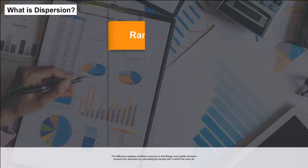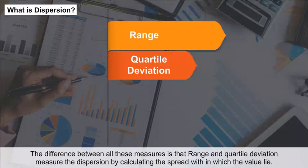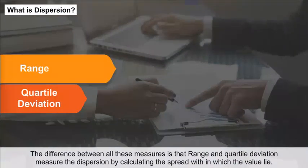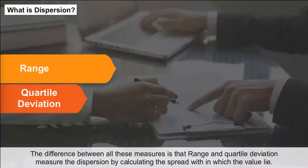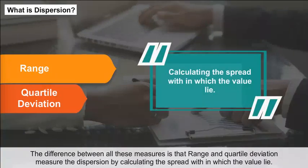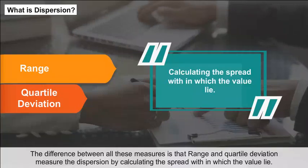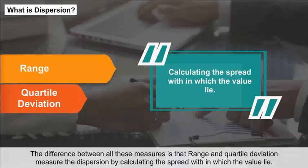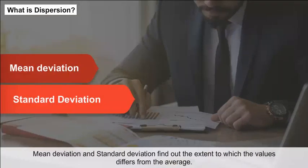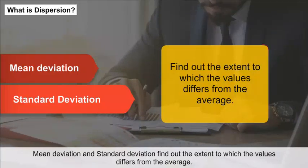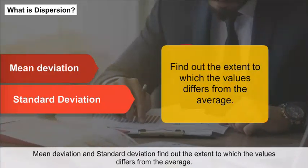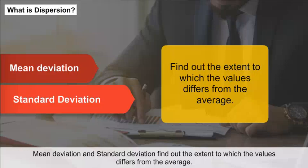The difference between all these measures is that range and quartile deviation measure the dispersion by calculating the spread within which the values lie, while mean deviation and standard deviation find out the extent to which the values differ from the average.